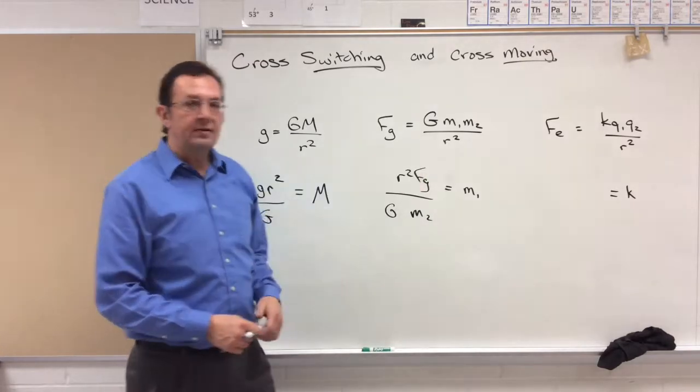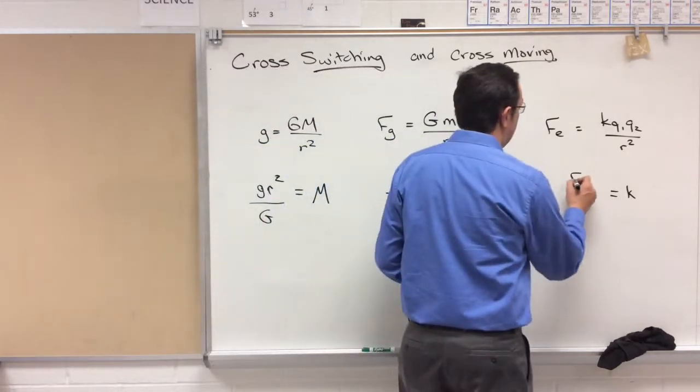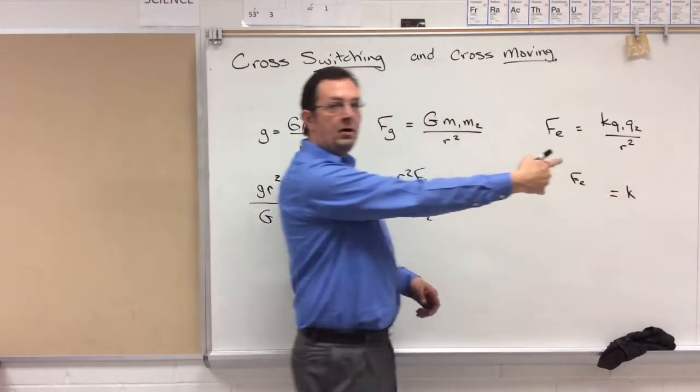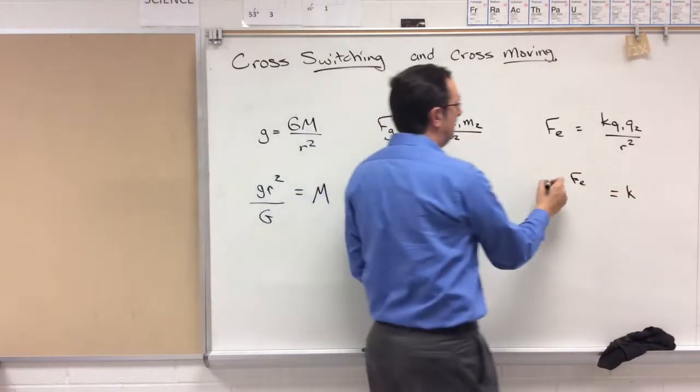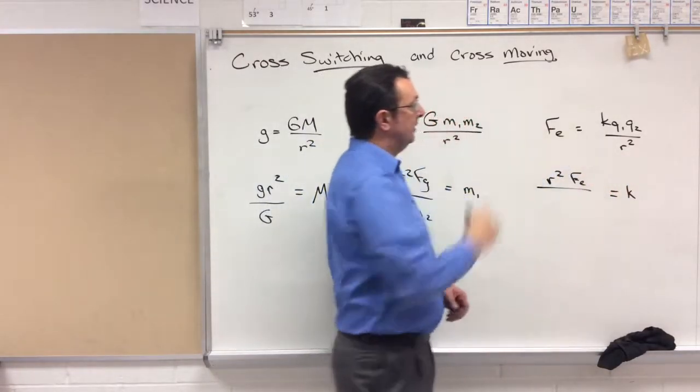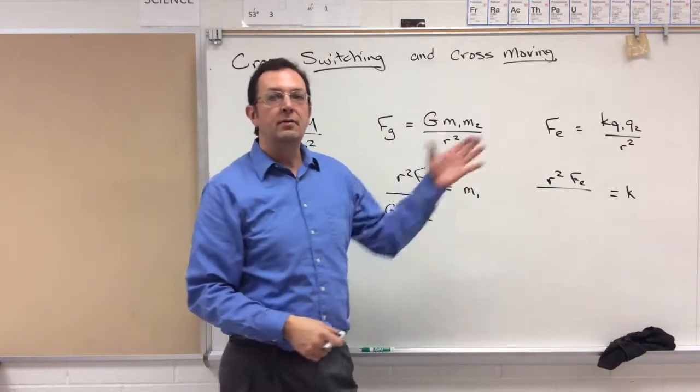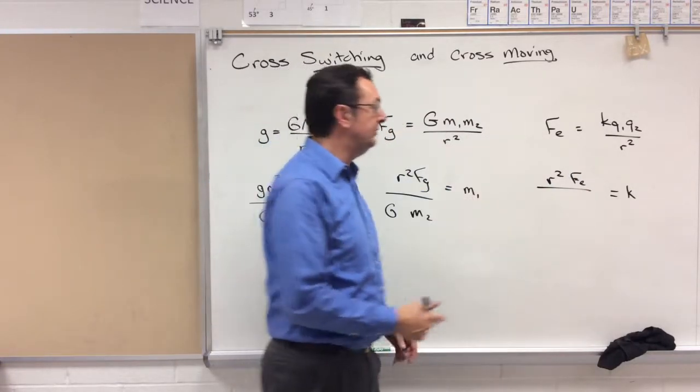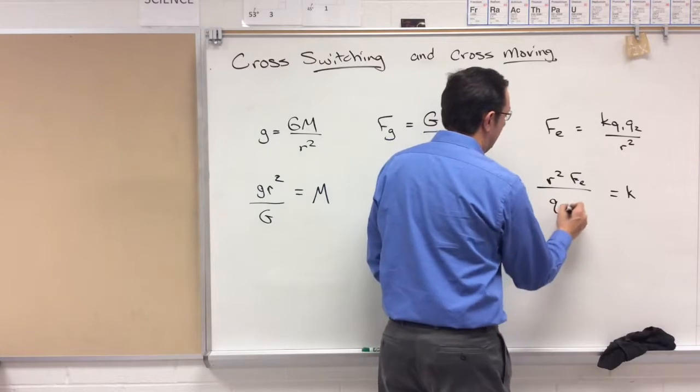And then solving for this last one, the F sub E, the R squared in the denominator moves up to the numerator. And on the other side we're solving for K, so the Q1 Q2 product moves to the denominator on the opposite side.